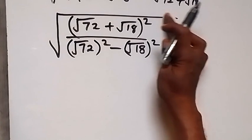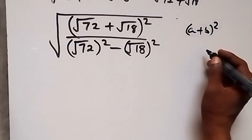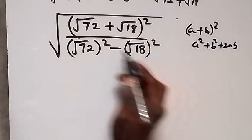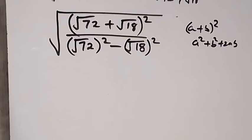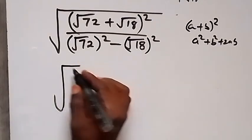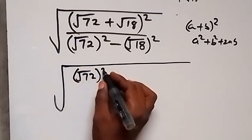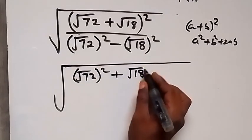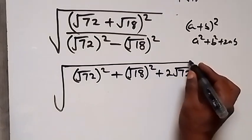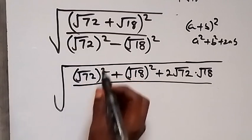We have (a + b) squared in the numerator, and expanding gives us a squared plus b squared plus 2ab. So expanding here gives us root 72 squared plus root 18 squared plus 2 times root 72 times root 18, all divided by the denominator.